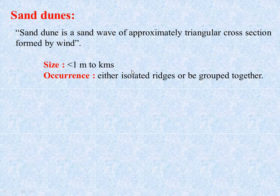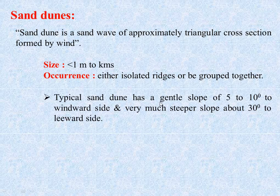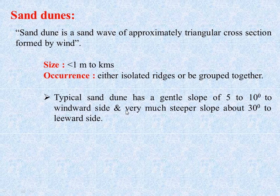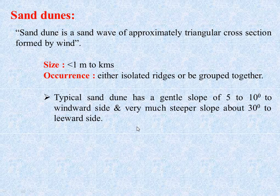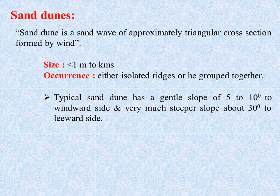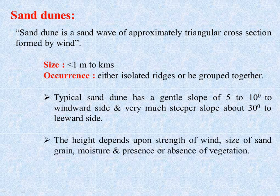Typically, a sand dune has a gentle slope of 5 to 10 degrees on the windward side and a much steeper slope of about 30 degrees on the leeward side. Wind tends to push individual particles onwards and upwards until the dune tip reaches a constant height. The height depends on wind strength, sand grain size, moisture, and presence or absence of vegetation.